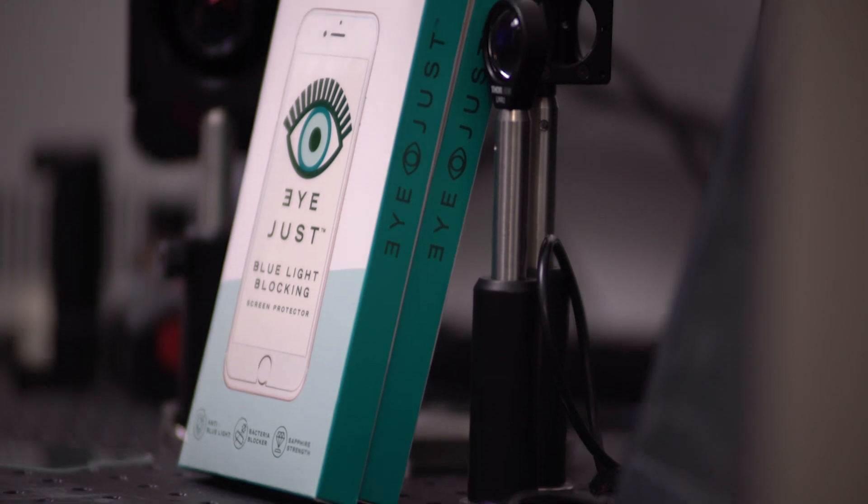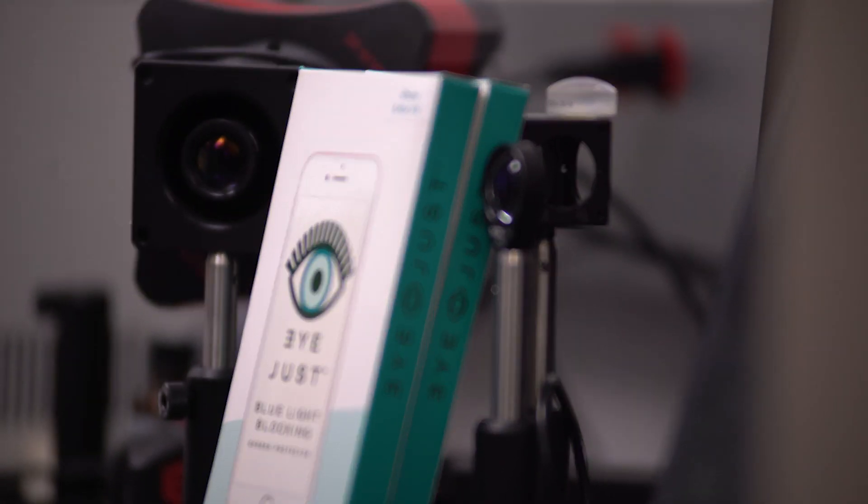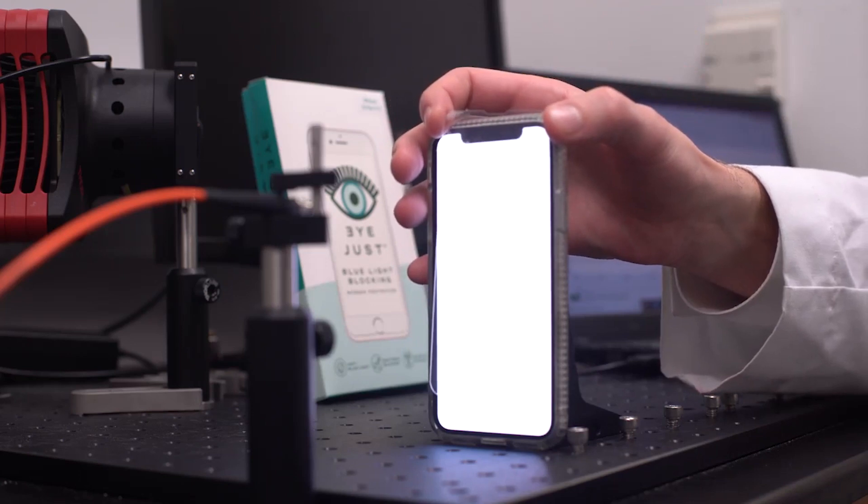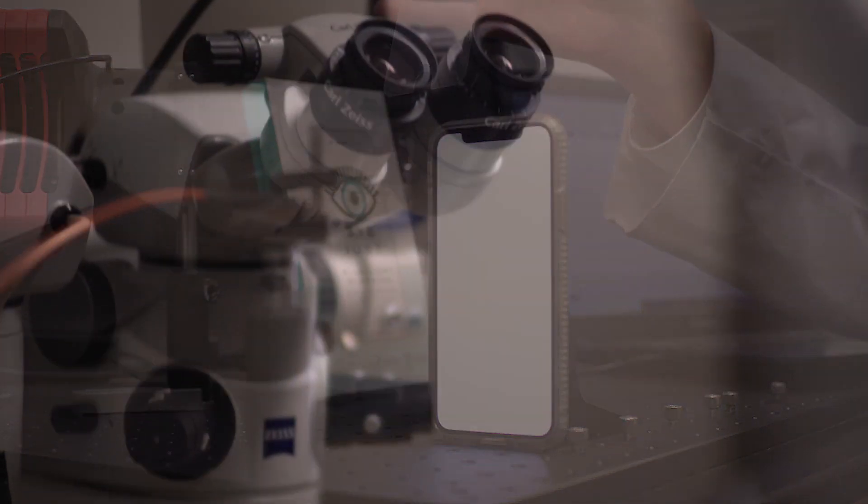iJust is on the cutting edge of research to offer a solution. iJust was designed as the first line of defense to block the most damaging blue light without changing the color of your screen.